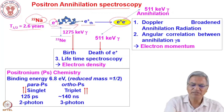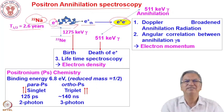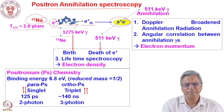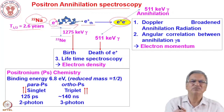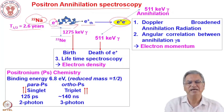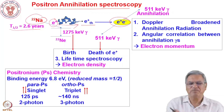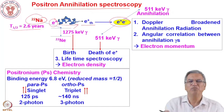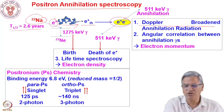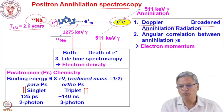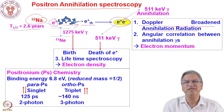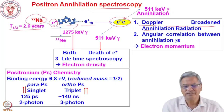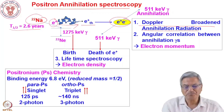If the electron with which the positron is annihilating is not stationary but has some momentum, then the 511 keV gamma line will get broadened. It will not be exactly 511 keV — it will be 511 keV ± ΔE because of the momentum of the electron. This gives rise to the technique called positron annihilation Doppler broadened annihilation radiation (DBAR). The 511 keV gamma ray is broadened due to Doppler broadening from the electron momentum, and we can use that broadening to determine the electron momentum.